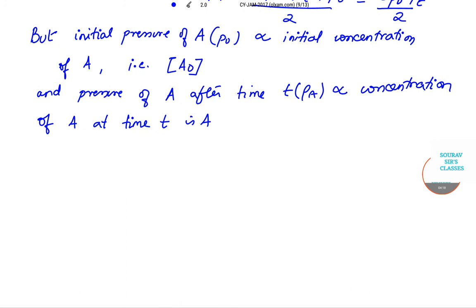Now what we will do simply, we will substitute the value. So substituting this value in the first order rate equation. So if we do this, what we get is K is equal to 1 by T natural log A0 by A.